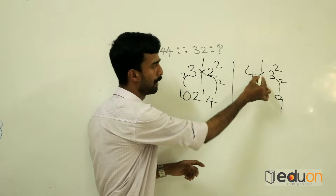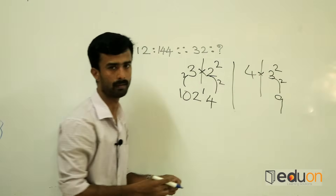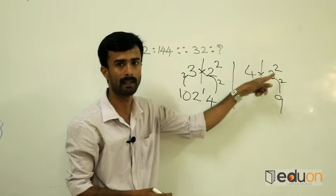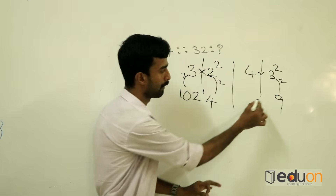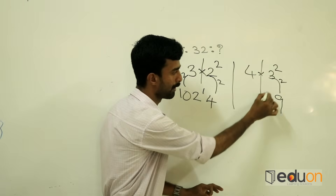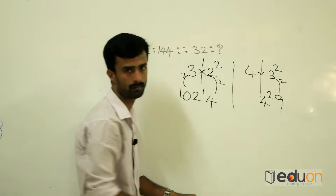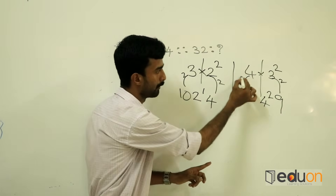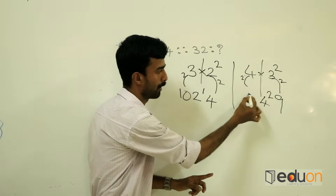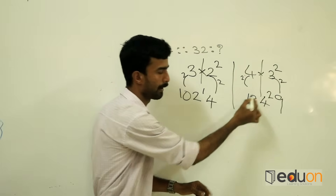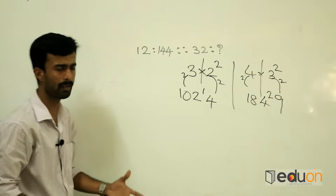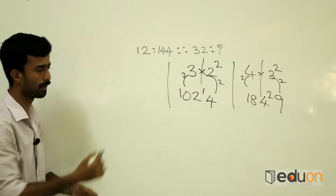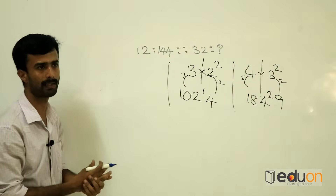43 is the number. 24 is the number. 4 squared is the next step. 24 is the result. 44 is the number. The remainder is carried forward.